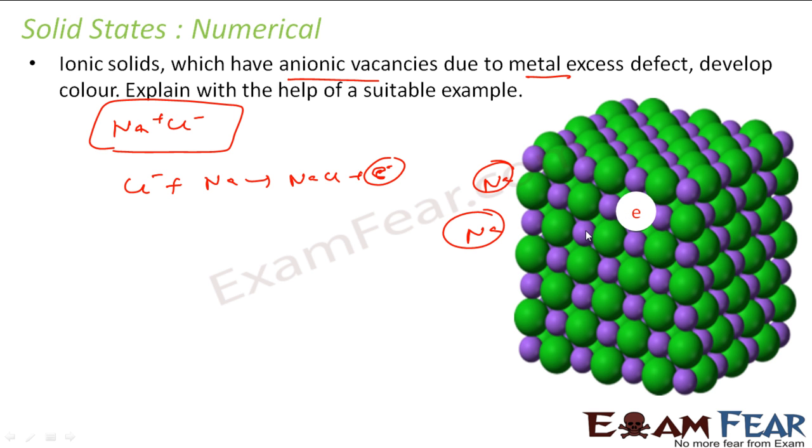Now why it developed special color is, since this is an electron here, the electron can easily absorb light, that is the visible radiation, and can easily get excited. Now if this electron gets excited, it goes to the higher energy level, but when it comes down back to its energy level, it emits some light and that is giving a special color. For example, in case of NaCl crystal, when you heat this in sodium vapor as I explained, my Cl- comes out and electron takes the place of Cl-, and this gives yellow color to this NaCl.